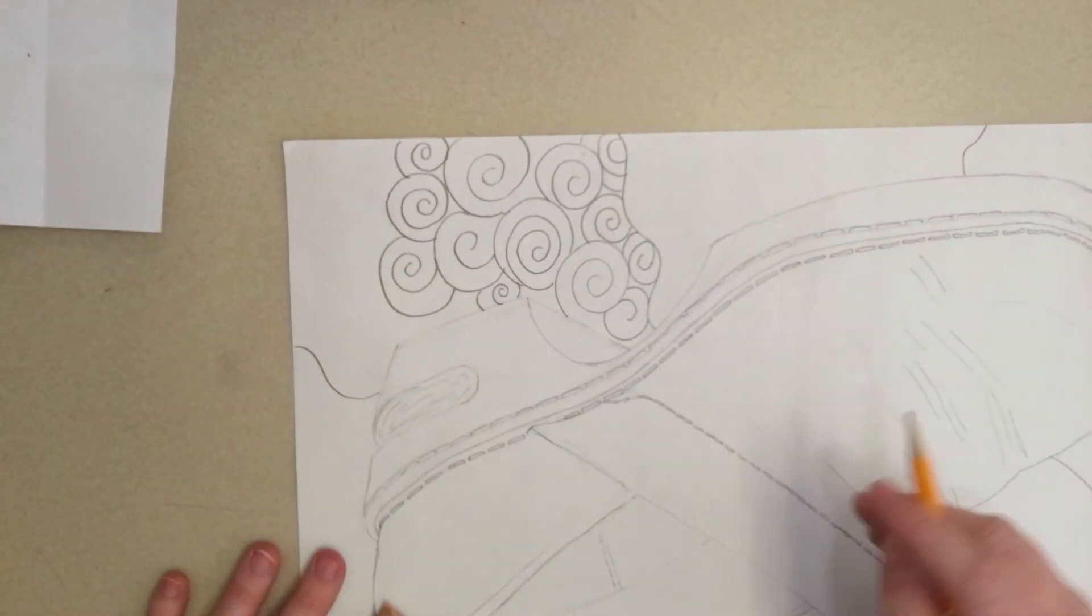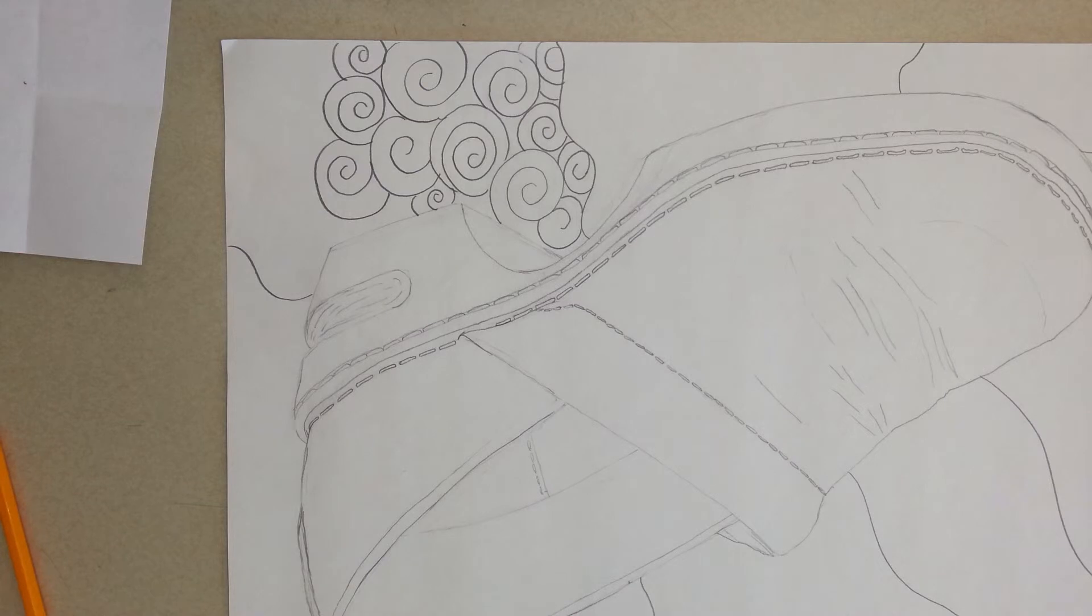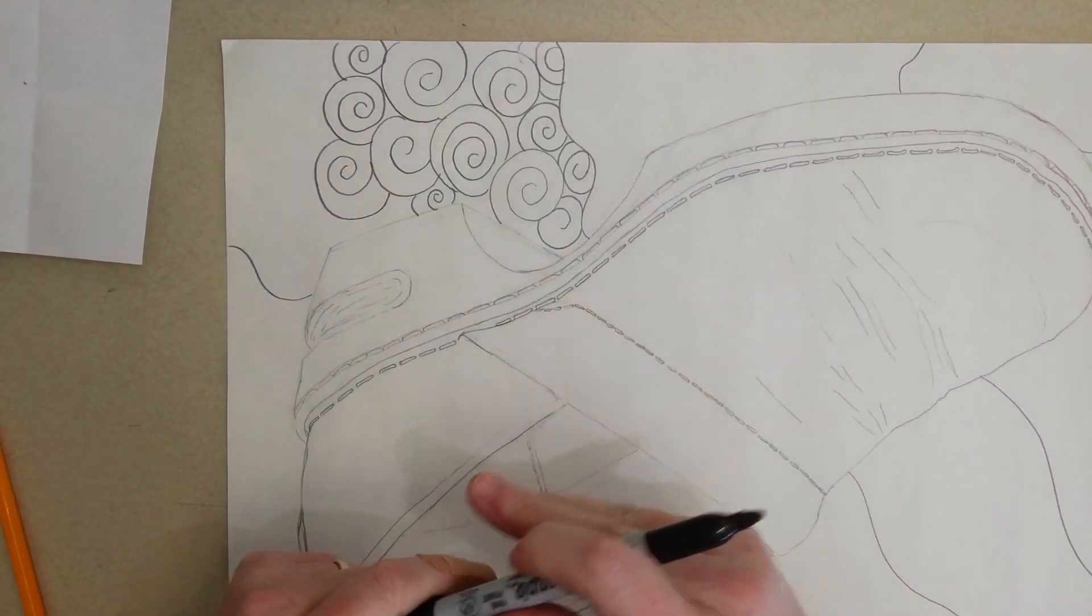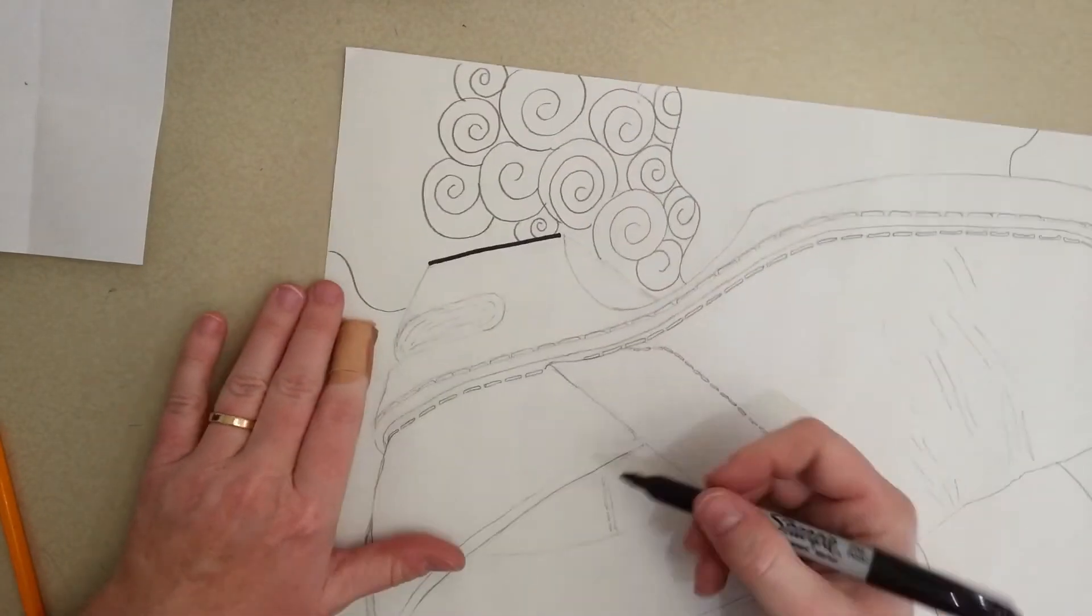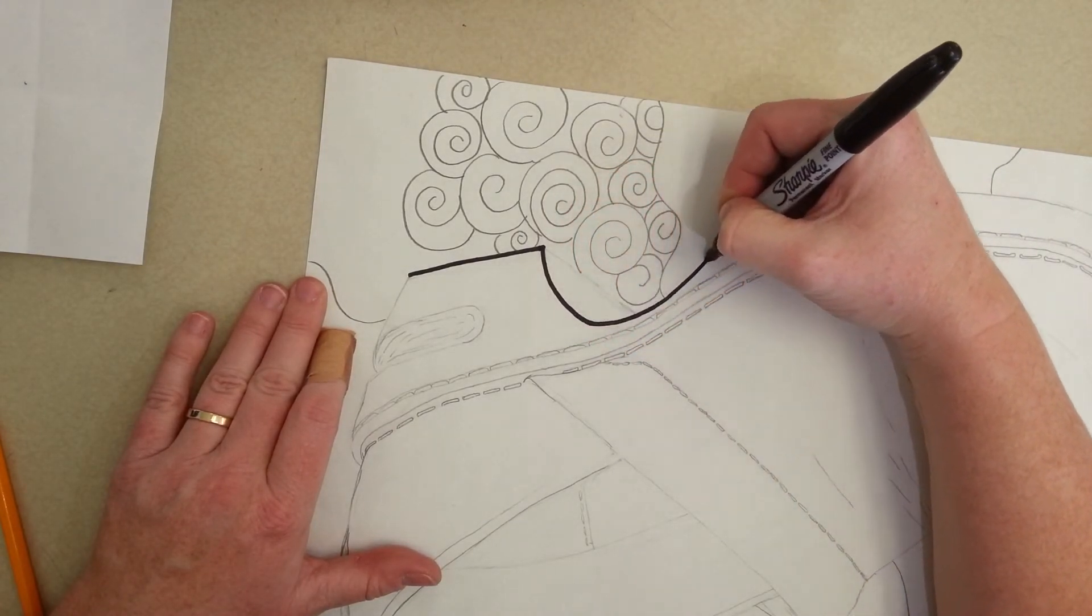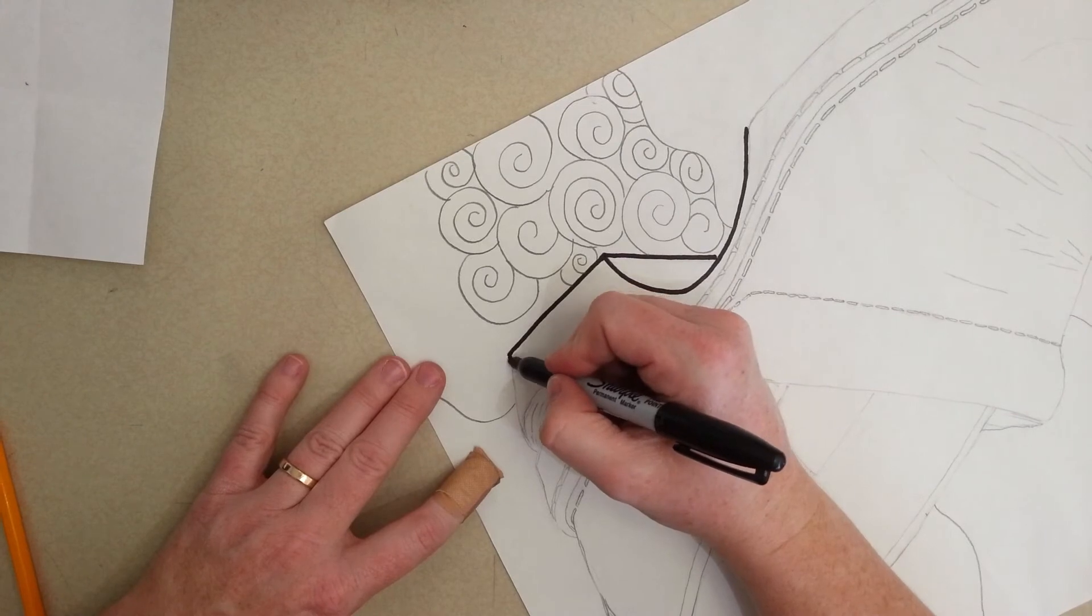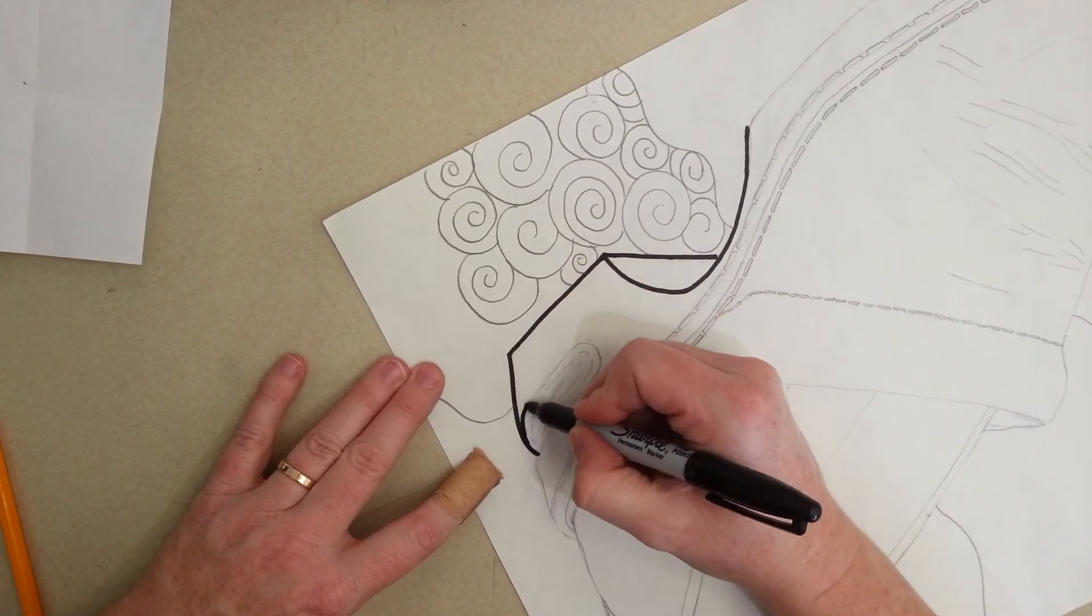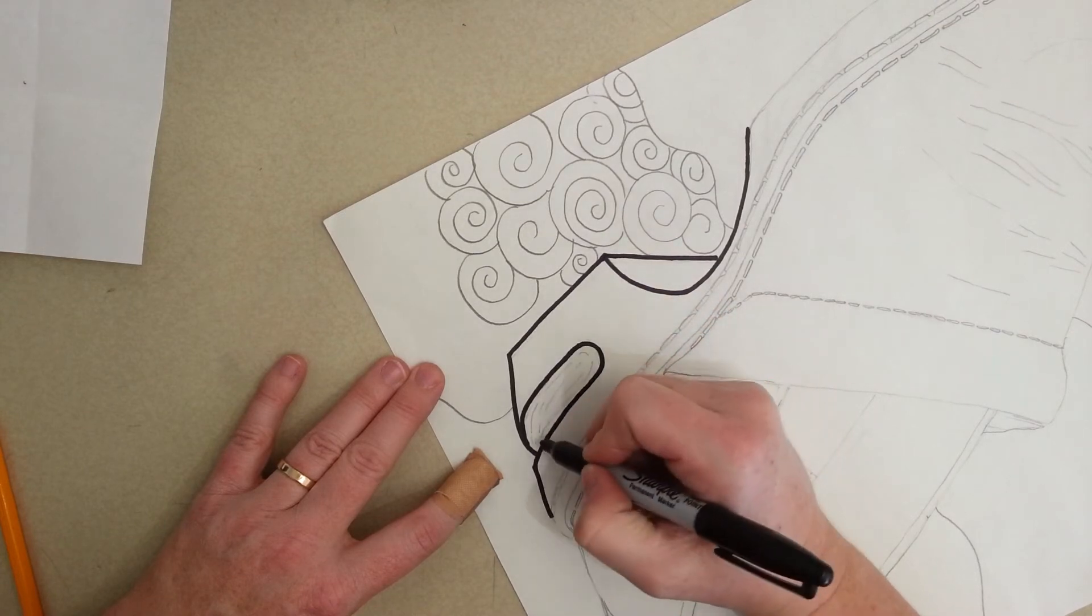Alright, so you're kind of getting the idea. And then once you have all of the sections filled up with your line designs, you're going to come and get a Sharpie from me, and you are going to outline everything that you did in pencil in Sharpie. So every pencil line gets outlined in Sharpie.